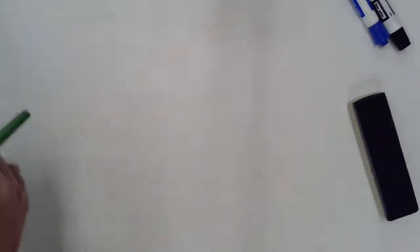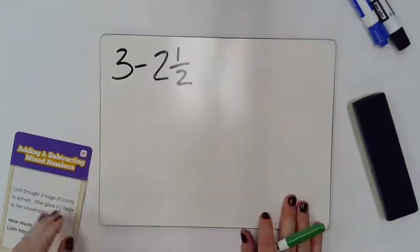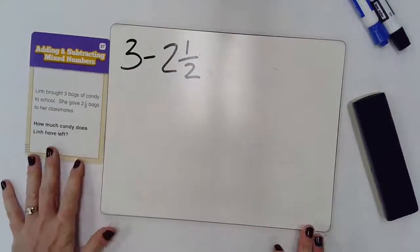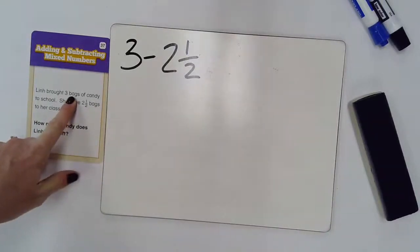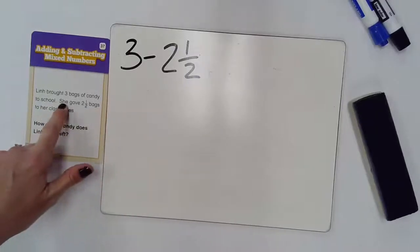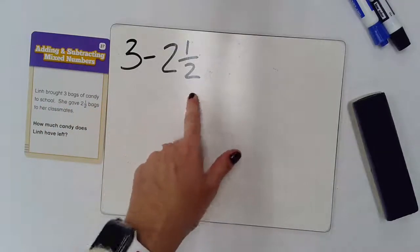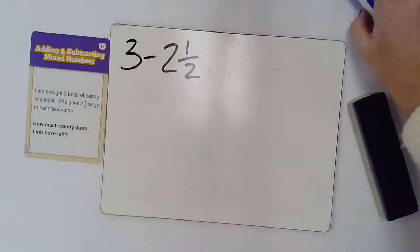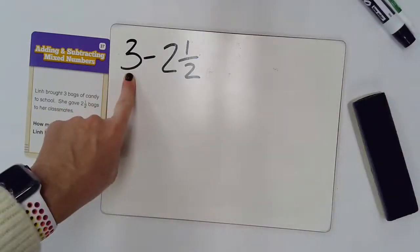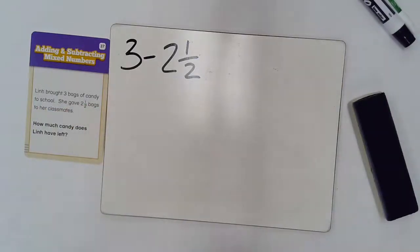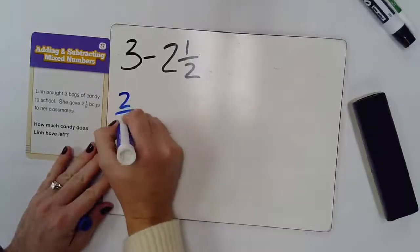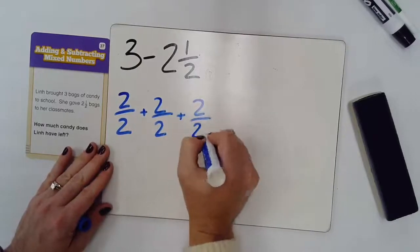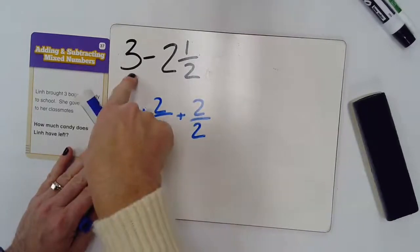So, for our last problem, again, it is subtraction. This time, our word problem is about candy. So, we bought 3 bags of candy and we gave 2 and a half to classmates. How much candy does she have left? So, an easy way to solve this is to turn that 3 into an improper fraction. So, I know that 2 halves plus another 2 halves is going to give me my 3 wholes. So, we know that 2, 2, and 2 is going to give me 6 halves.